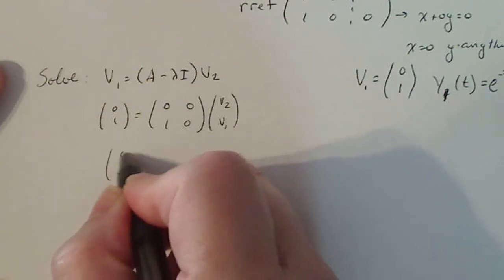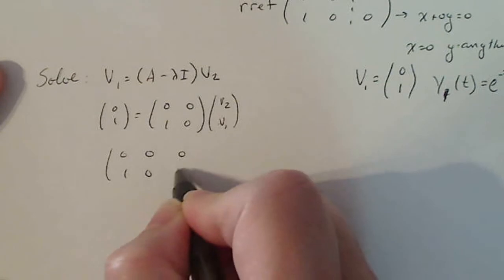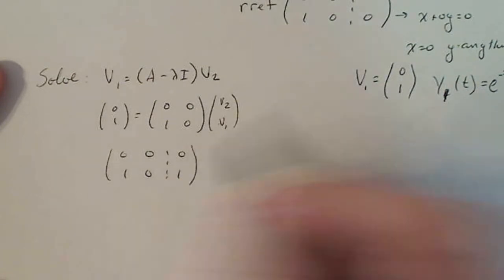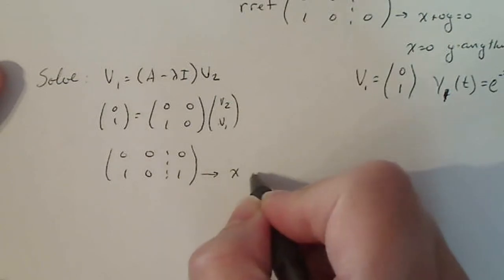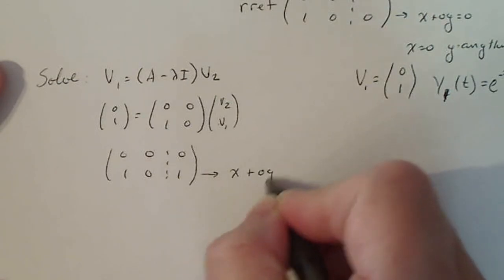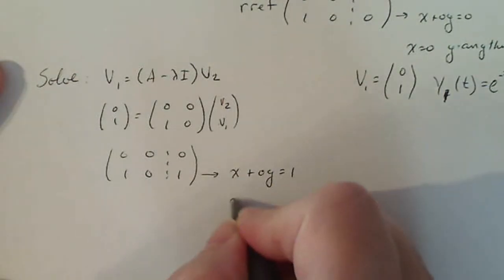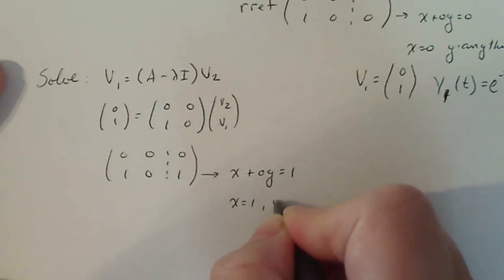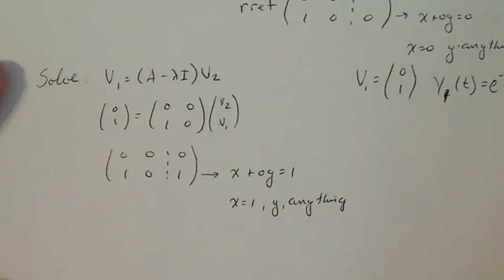So I'm going to write down the augmented matrix: 0, 0, 0; 1, 0, 1. It's already in reduced row echelon form. So down here, I get x plus 0y is now equal to 1. So that forces x to be 1 in this case, and y can be anything. You can choose y to be 1. In this case, y can be 0.